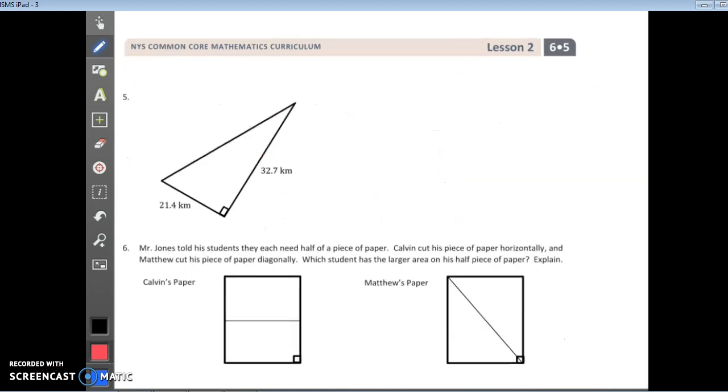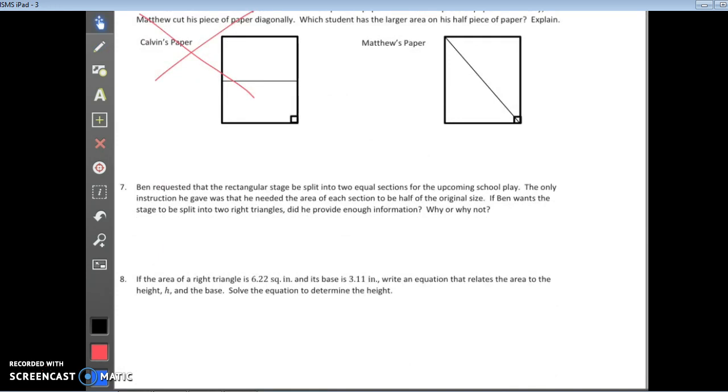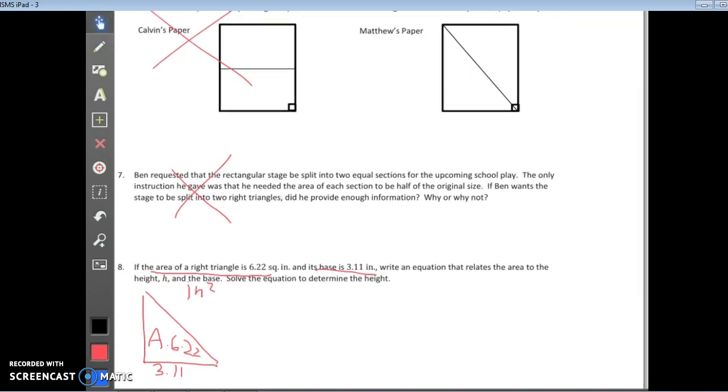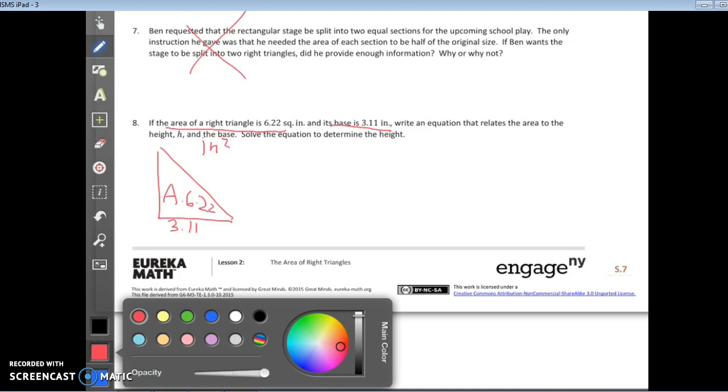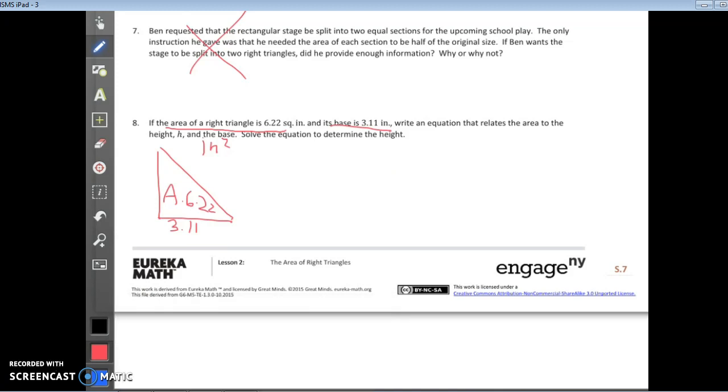Number 5 is the same as before. We're going to skip number 6. Skip number 7 is something I want you to think about on your own. Let's look at number 8. Eight is one of those problems that's going to make you think backwards. The area of a right triangle is 6 and 22 hundredths square inches. The base is 3.11. Do we know the height? No, we do not know. We're looking for h.